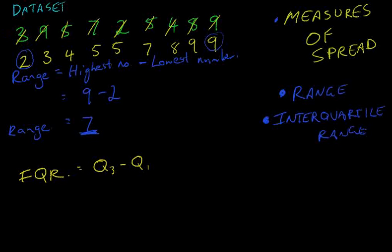Now if I quickly jump through here, first of all I find my median: one, two, three, four, five, one, two, three, four, five. Here's my median. Now my Q1 is here at 3.5 and my Q3 is here at 8.5.